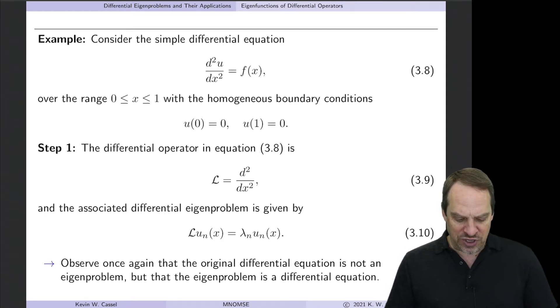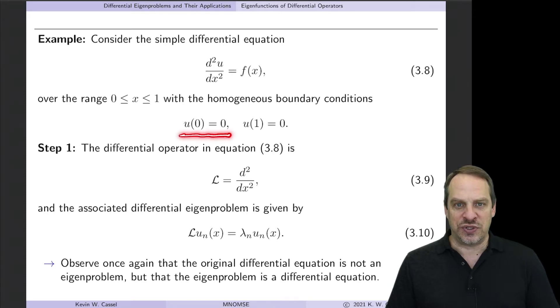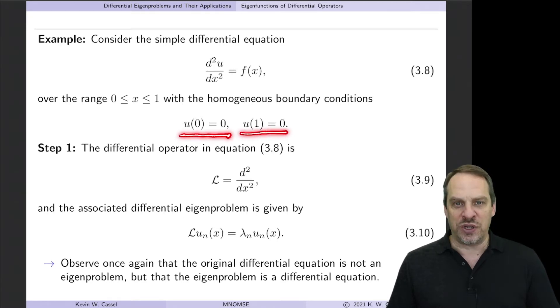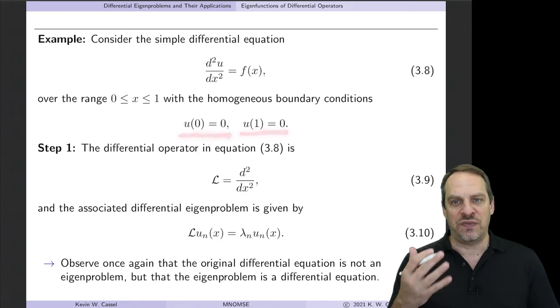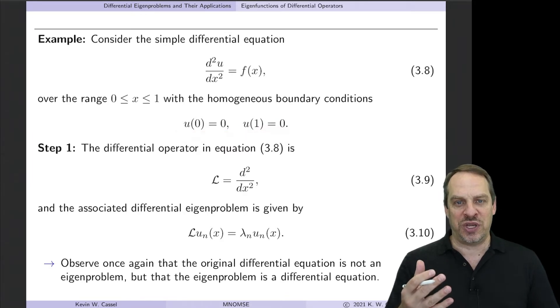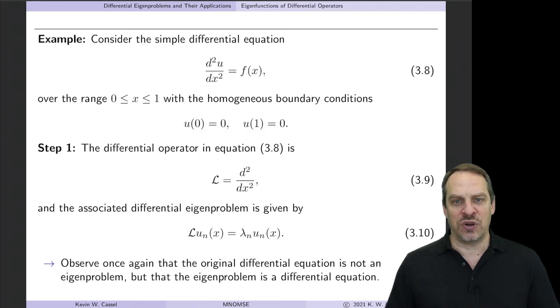The boundary conditions are that at x equals 0, u is 0, and at x equals 1, u is also 0. Remember, we need to have homogeneous boundary conditions in order to use this approach.